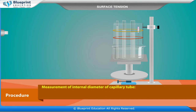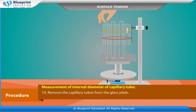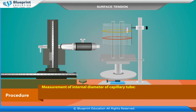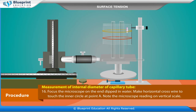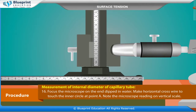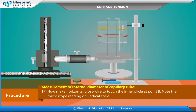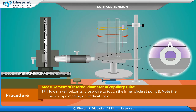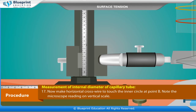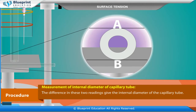Measurement of internal diameter of capillary tube. Remove the capillary tubes from the glass plate. Place the first capillary tube horizontally on the adjustable stand and focus the microscope on the end dipped in water. Make the horizontal cross wire touch the inner circle at point A and note the microscope reading on the vertical scale. Now make the horizontal cross wire touch the inner circle at point B, and note the microscope reading on the vertical scale. The difference in these two readings gives the internal diameter of the capillary tube.